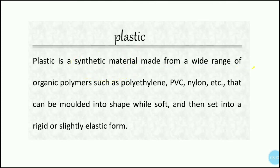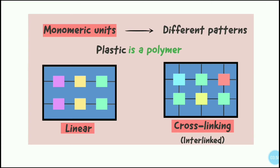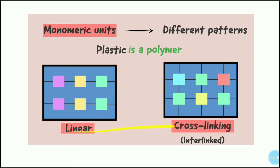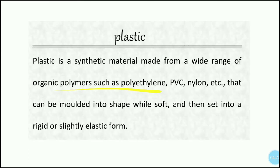Plastic is made from a wide range of organic polymers. What is a polymer? We have studied atoms and molecules. We have many monomers which are linear — not cross-linked, not circular. When we interlink these arrangements, we get a chain. These small monomer units arranged in different patterns form what we call a polymer.